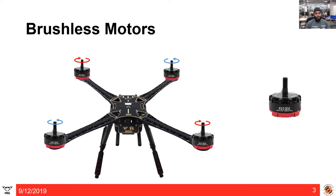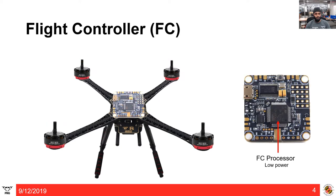Now let's start adding components to the quadrotor. Brushless motors are definitely the most important components when it comes to quadrotors. It is very important to choose relevant motors depending on how fast or agile you want the quadrotor to be, as a mismatch might damage your motors. Note that two of the motors spin in the clockwise direction whereas the other two spin in the anti-clockwise direction — we'll learn why in the quadrotor dynamics class.